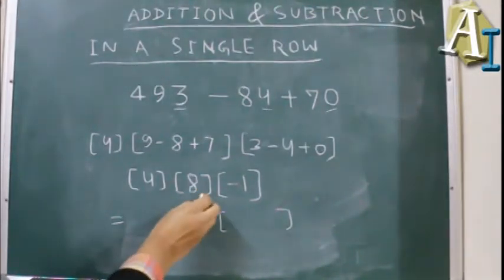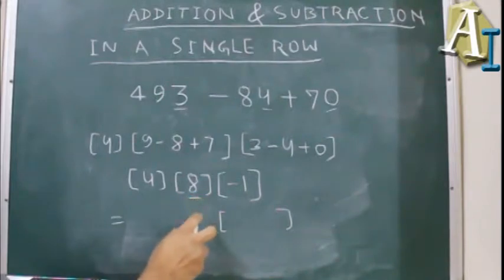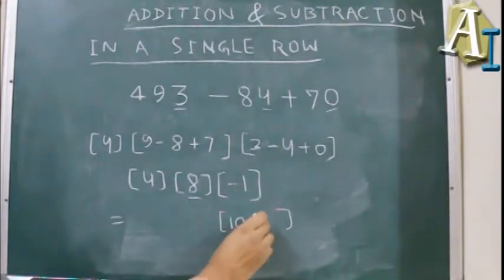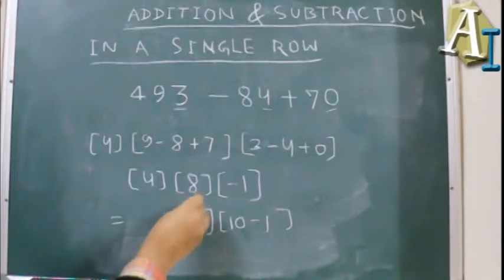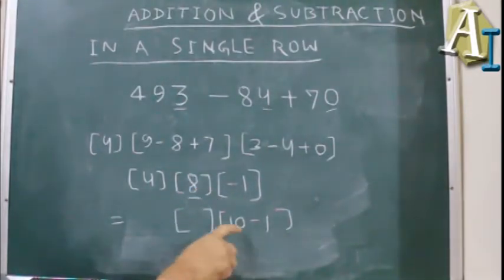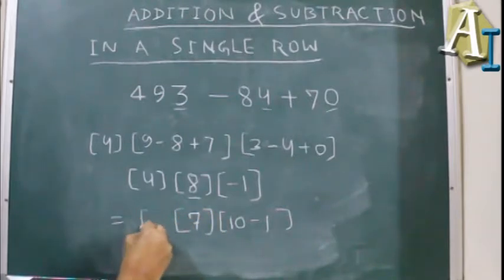Since we will borrow 1 from the tenth place, we actually get 10, and we have minus 1 here. Now what is left in the tenth place? We have already borrowed 1 in the unit place, so we are left with 7 here and 4 in the 100th place.